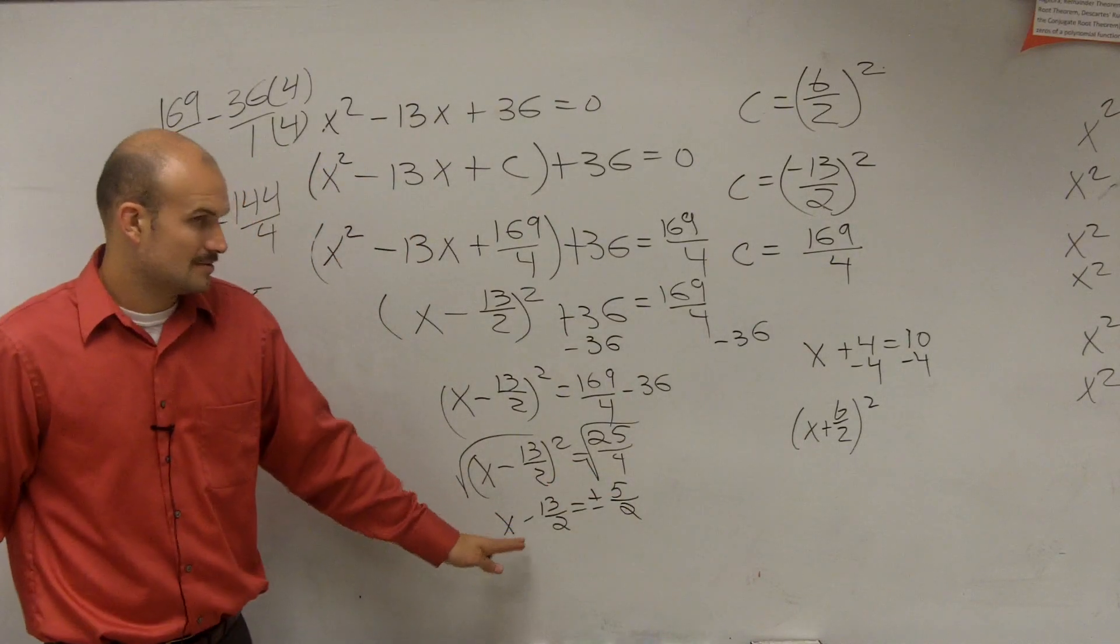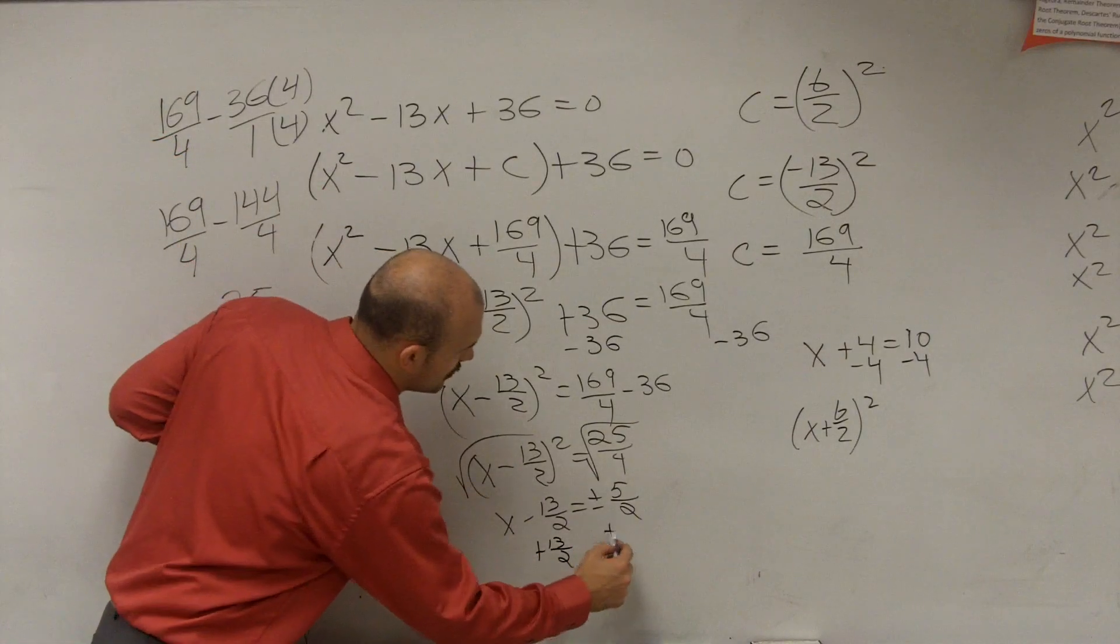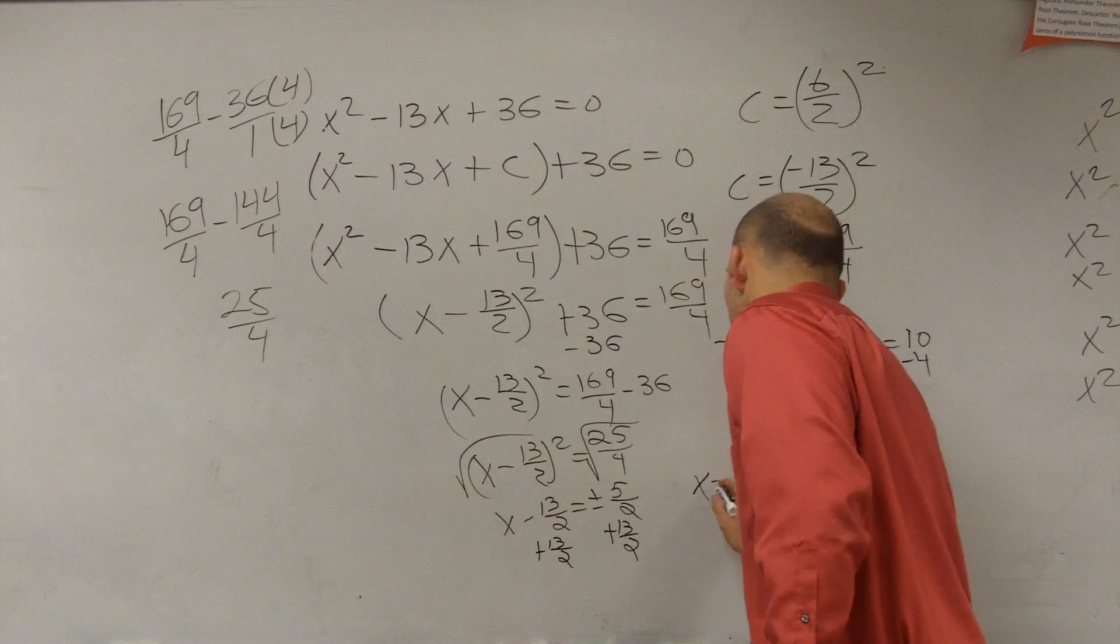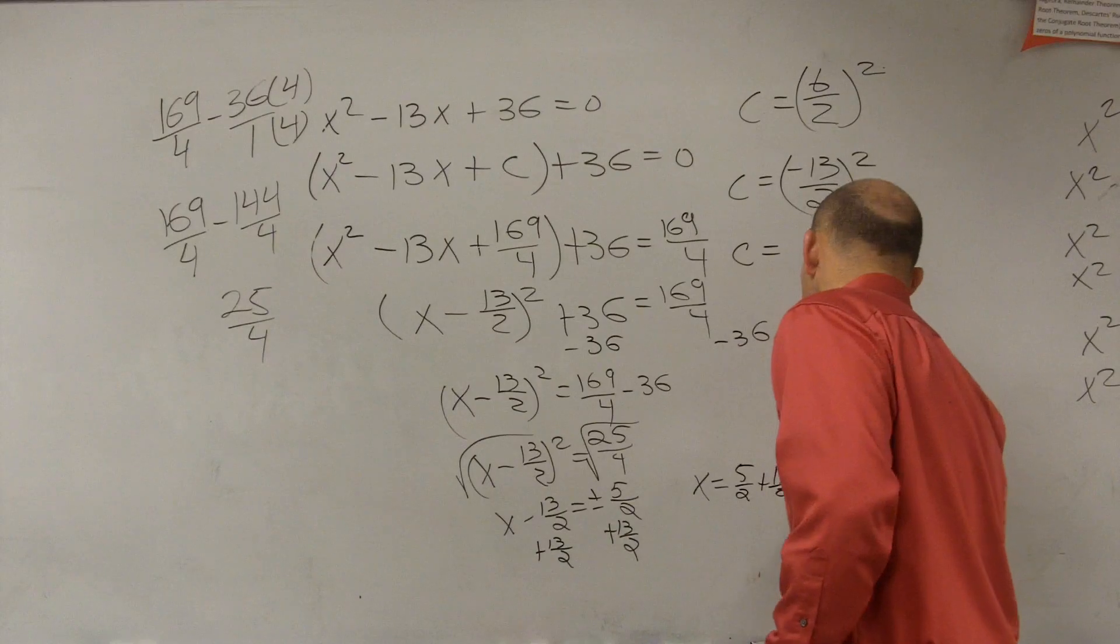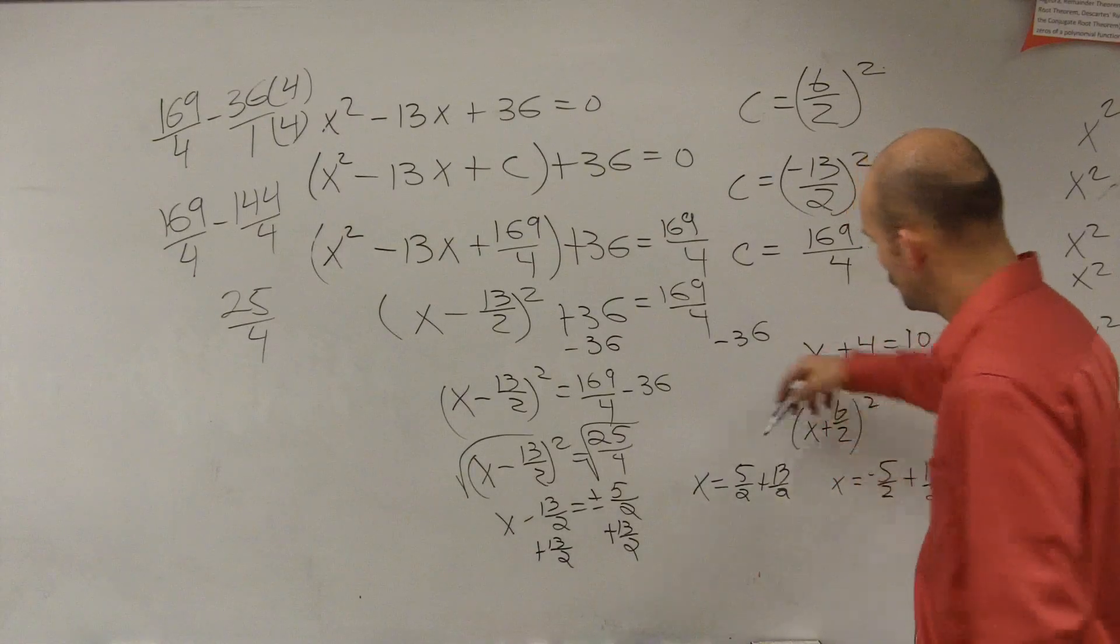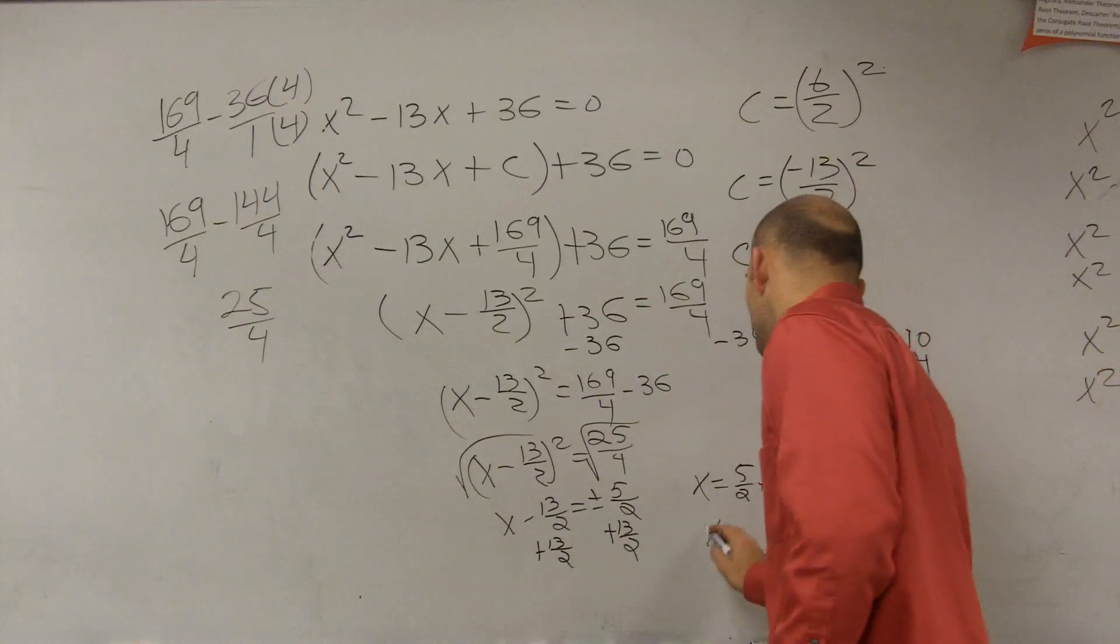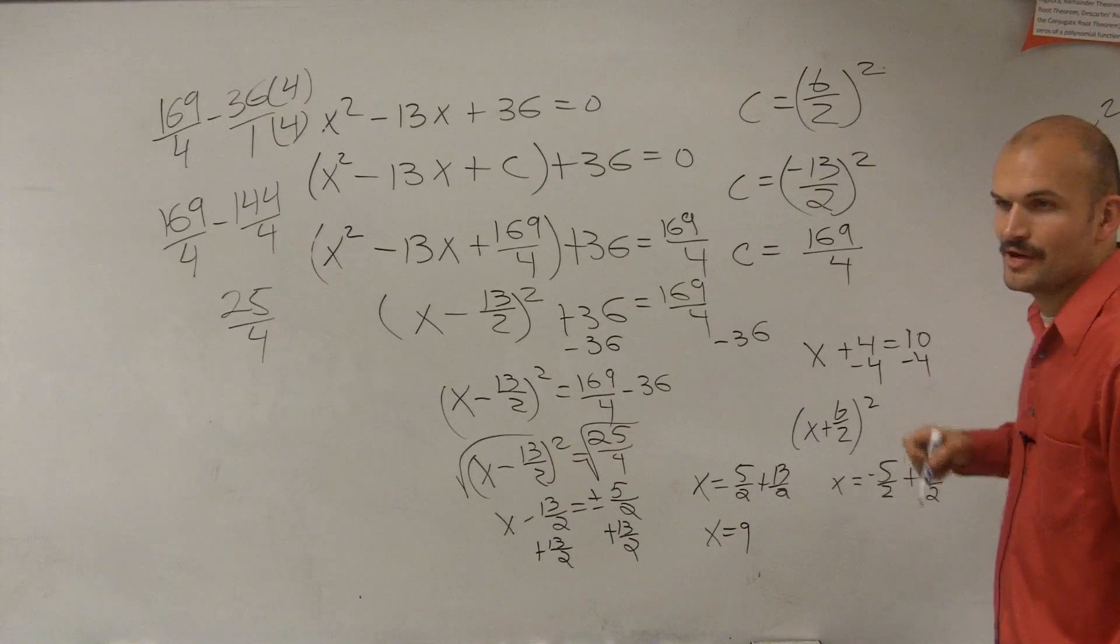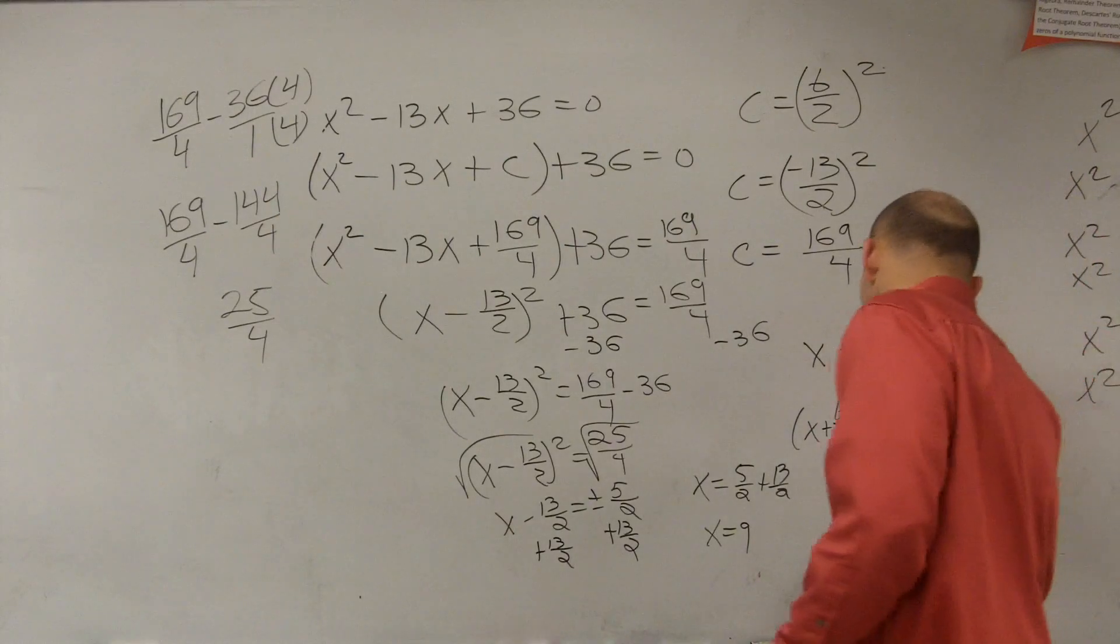So now I'm just going to separate this into two different equations. So now I have to add 13 over 2 to both sides. So I'm going to have two equations. My two equations now are x equals positive 5 over 2 plus 13 over 2, and x equals negative 5 over 2 plus 13 over 2. 5 plus 13 is 18. 18 divided by 2 is 9. Negative 5 plus 13 is 8. 8 divided by 2, sorry, that's not 7, that's 8, negative 8, x equals negative 4.